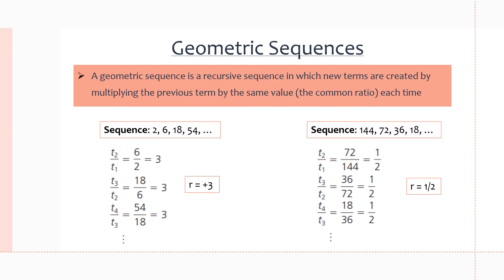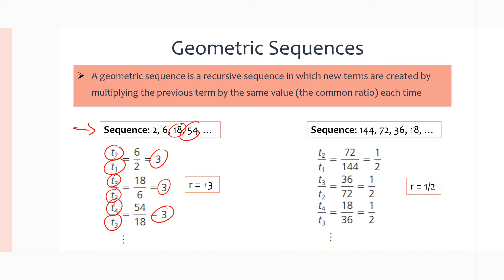Here are a couple of examples. We have the sequence 2, 6, 18, and 54. Taking the ratio between consecutive terms: T2 divided by T1 is 6 divided by 2, which equals 3. T3 divided by T2 is 18 divided by 6, which is 3. T4 divided by T3 is 54 divided by 18, which is also 3. So our common ratio is 3. This makes it recursive because to get 6 you multiply 2 by 3, to get 18 you multiply 6 by 3, and to get 54 you multiply 18 by 3.